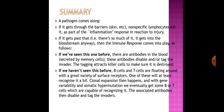In summary: a pathogen comes along. If it gets through the barriers, the lymphocytes kill it non-specifically as part of the inflammatory response. If it gets past that, the immune response comes into play. If we've seen this pathogen before, antibodies in the blood disable and tag the invader, and the tagging attracts killer cells to destroy it. If we haven't seen it before, B cells and T cells with a great variety of surface receptors recognize it; clonal expansion occurs, and through gene variability and somatic hypermutation, B or T cells capable of recognizing it are produced, and the associated antibodies then disable and tag the invaders.